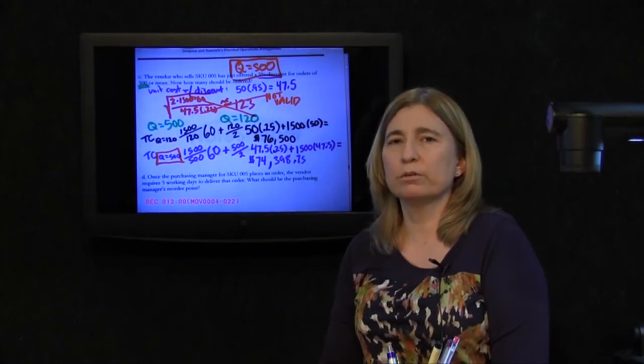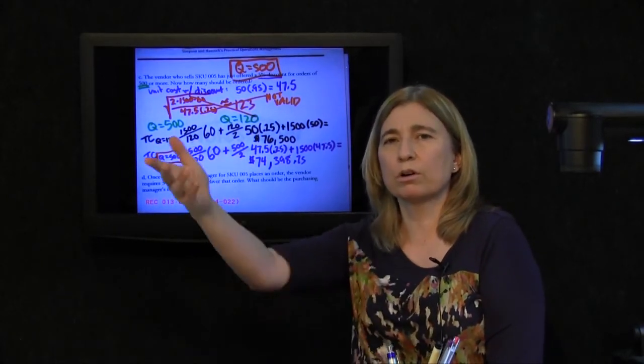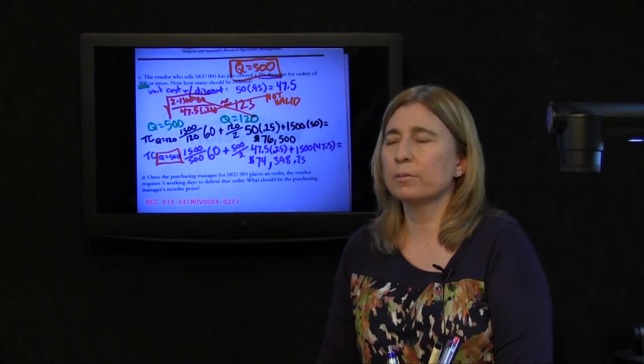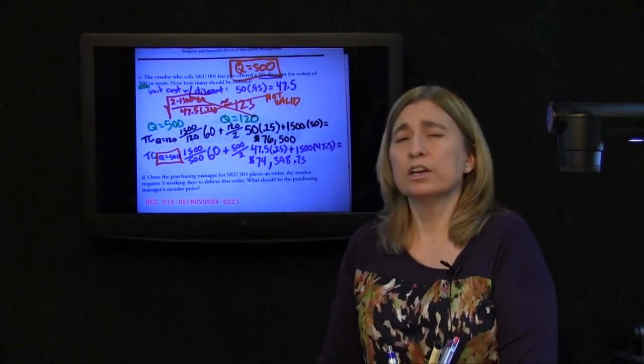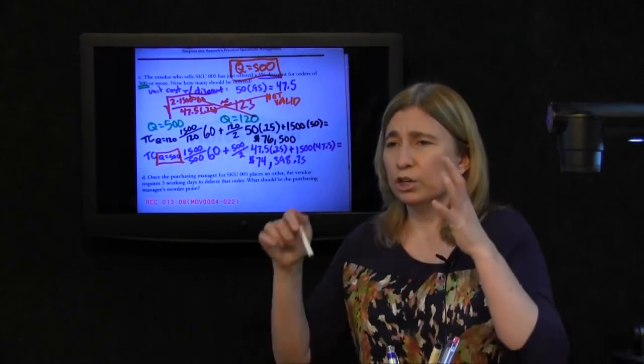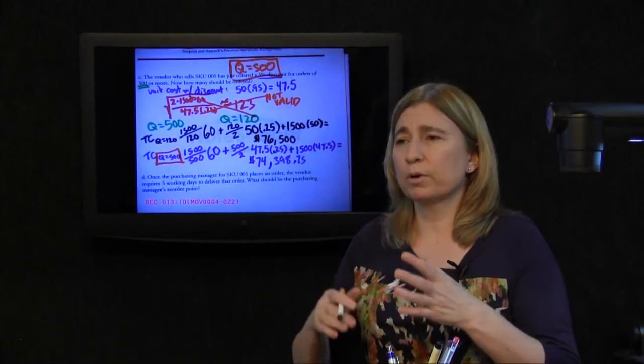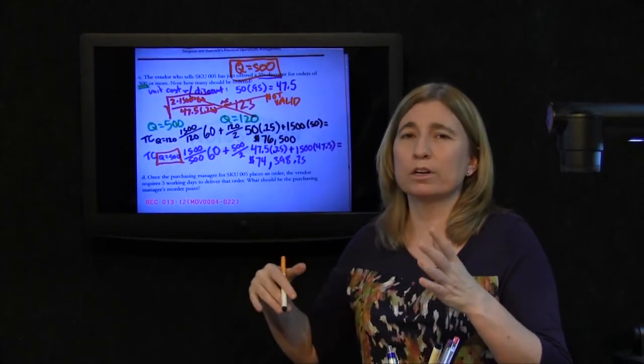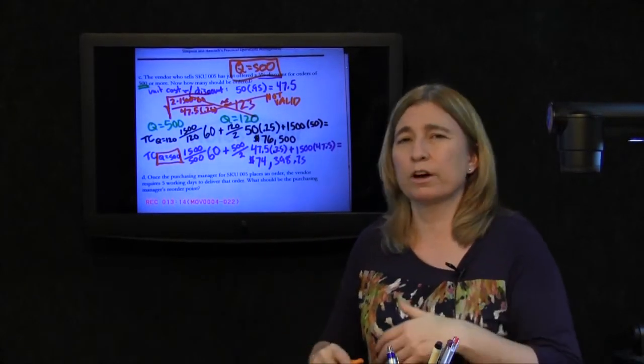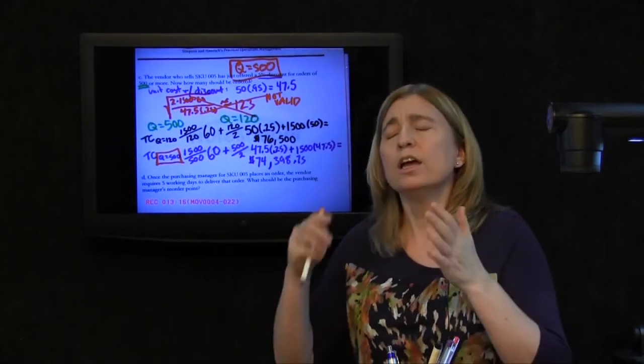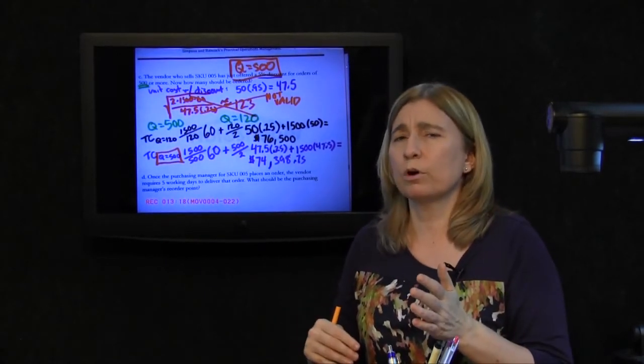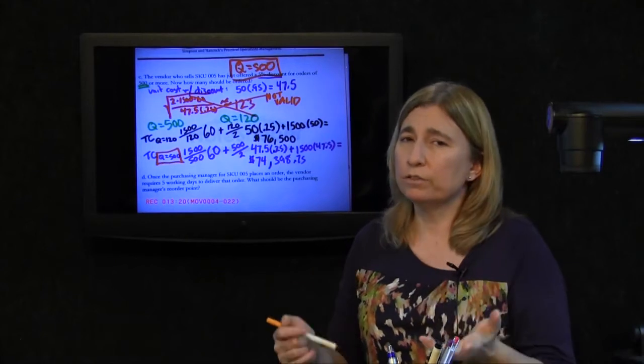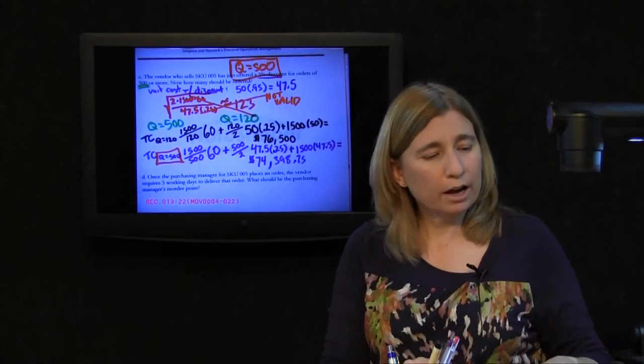Now how much should be ordered? Q equal 500. Now you might be looking at that and thinking, well, that's obvious. I mean, they offered you a discount. Aren't you going to order then the 500 at a time? No, not necessarily. You have to check it. Take your valid EOQ and compare it to each price break quantity. Maybe they had another scheme for a thousand or more, fifteen hundred or more. Each price break quantity that qualifies you for a lower price. You've got to check.